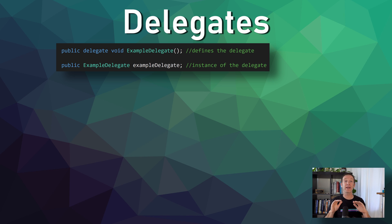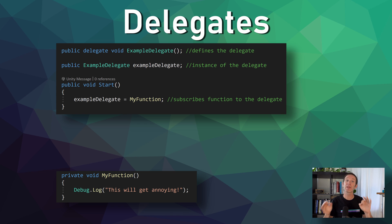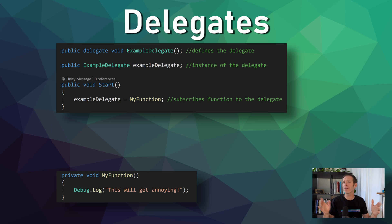The instance of the delegate is defined just like any other field — choose whether it's public or private, then the type of the delegate, and give the instance a name. We need to subscribe a function to the delegate. This is done with an assignment statement. Notice that we have not included the parentheses after the name of the function. After all, we are assigning the function, not calling the function. And it's a bit weird, but it does sort of make sense.